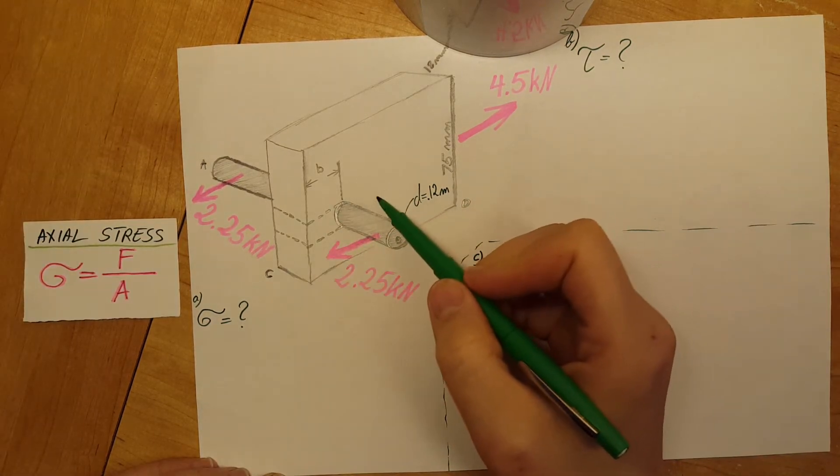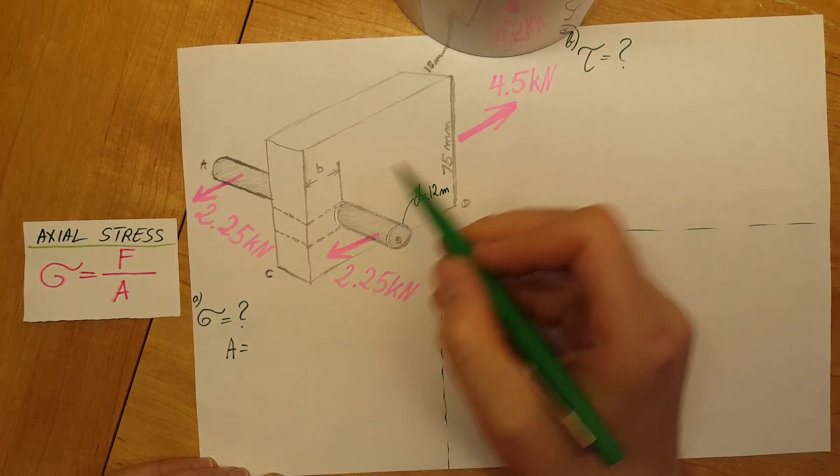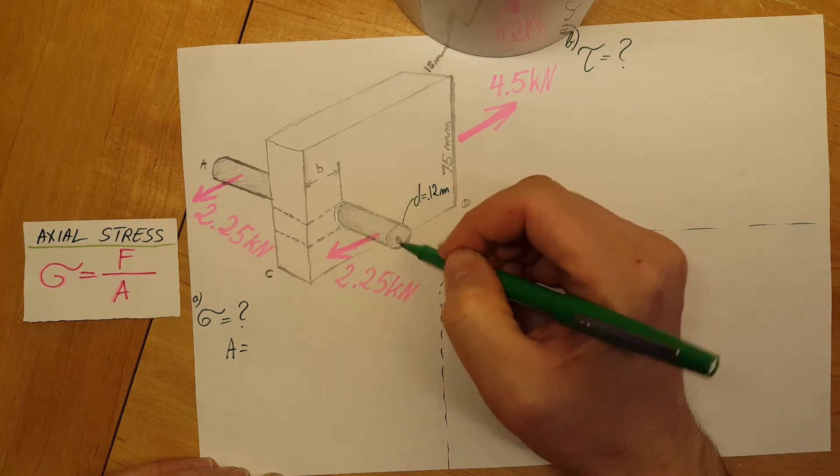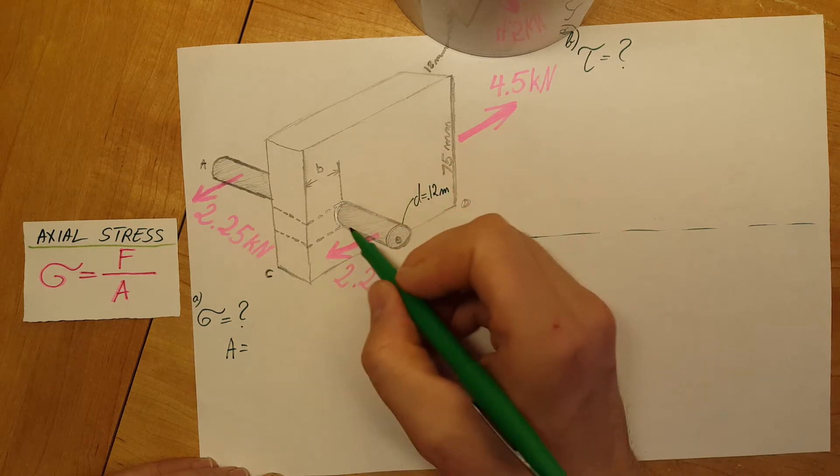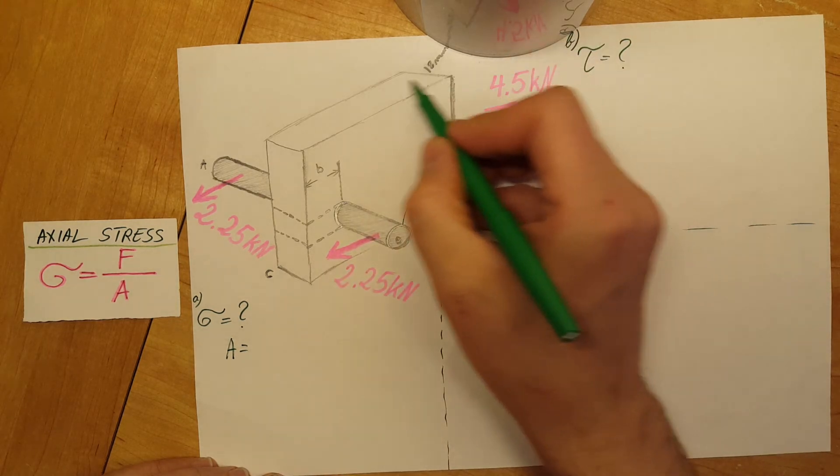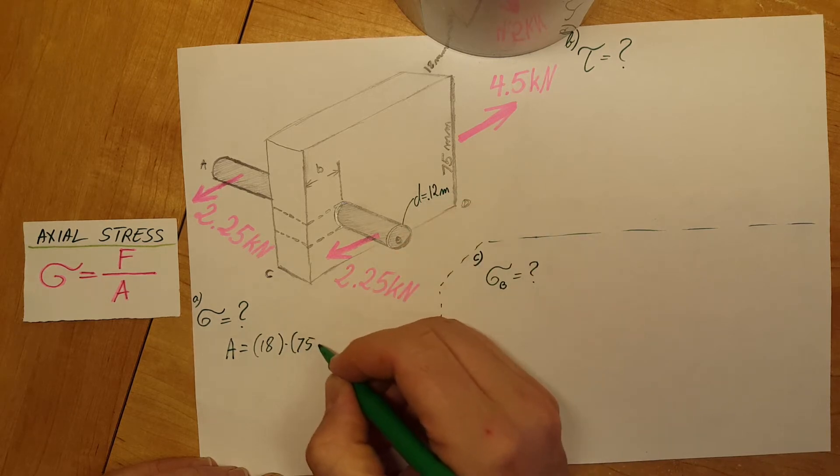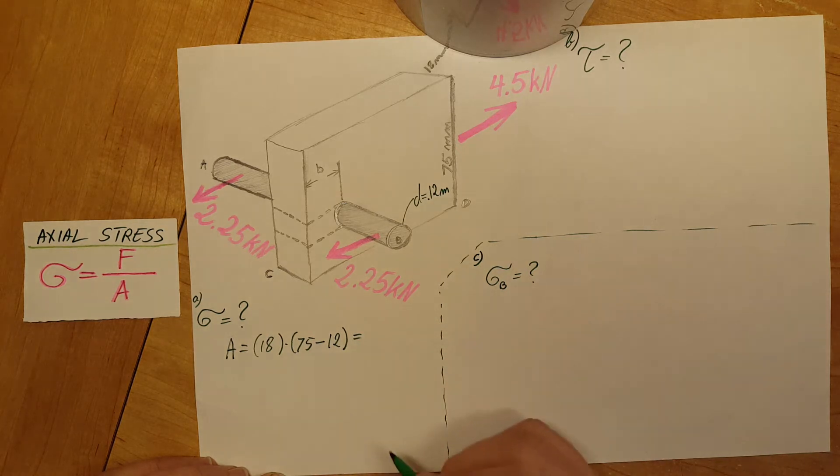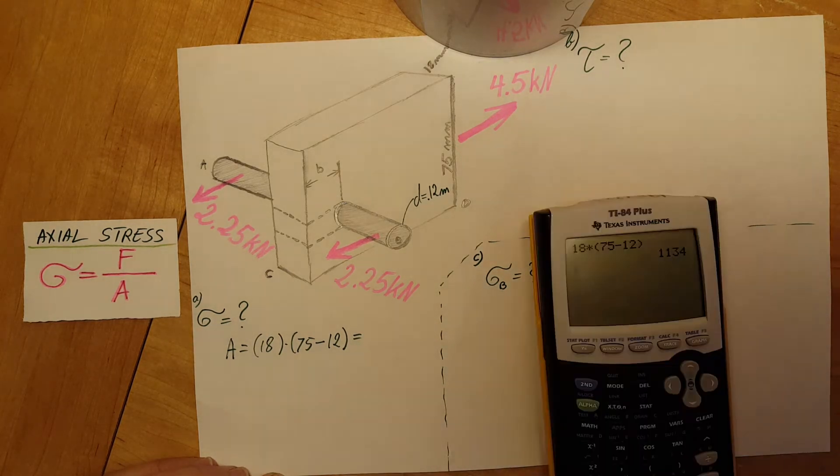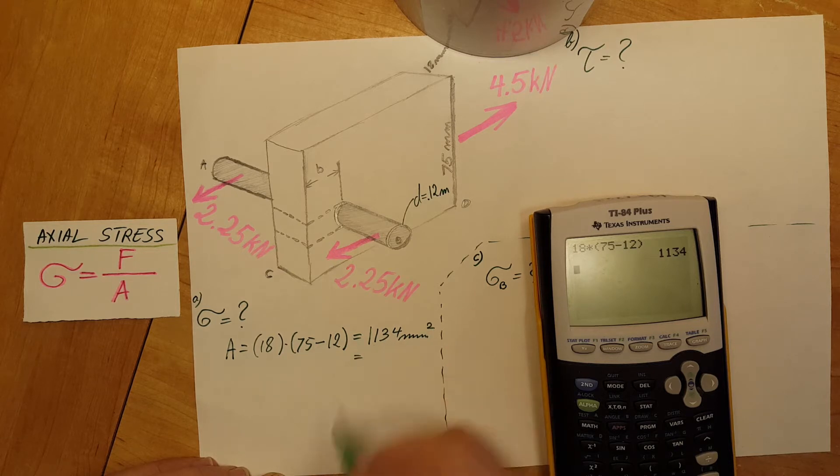Let's calculate our area of interest for our formula. That would be A equals 75 minus the diameter of the steel rod, which will give us the length where the steel rod goes through. So this would be 18 millimeters times 75 minus the diameter that we just said is 12 millimeters.